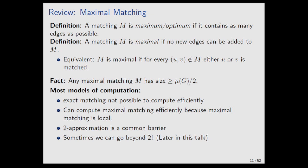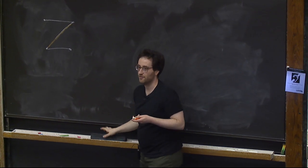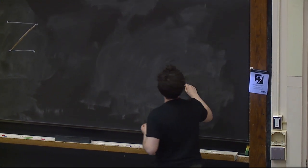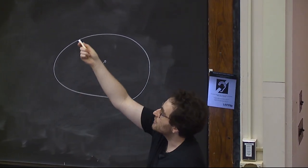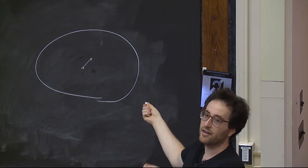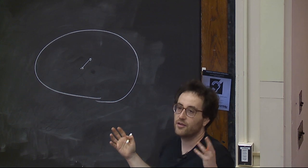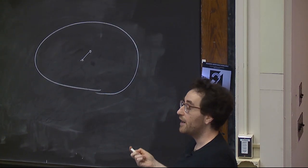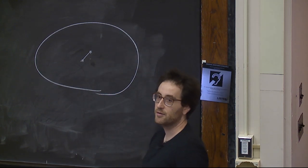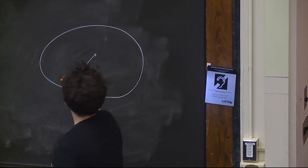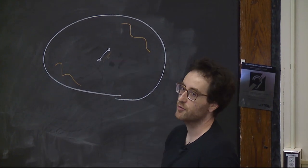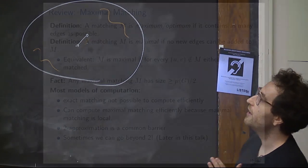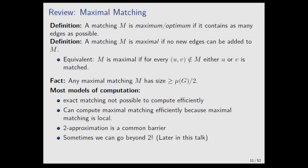The nice thing about maximality is it's much easier to compute than a maximum matching, because it's defined in terms of local constraints. For every edge not in the matching, one of its endpoints is already matched — that's just a constraint on every edge. To decide if an edge belongs in a maximal matching, you just check whether either endpoint is matched. But for a maximum matching you'd need to look for augmenting paths, which requires looking at the whole graph. That's the intuition for why maximal matching is much easier to compute in different models.